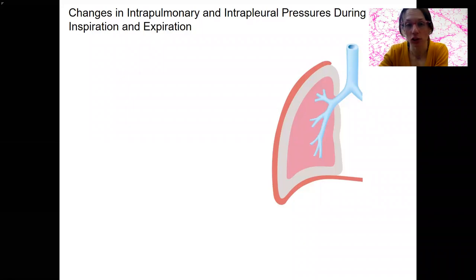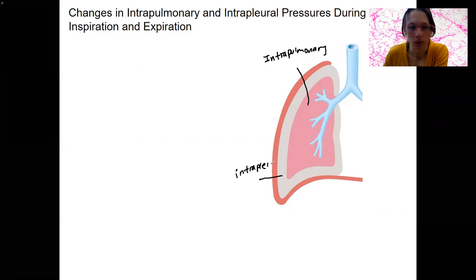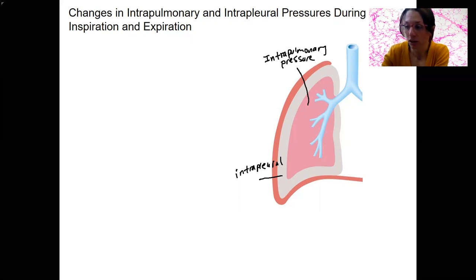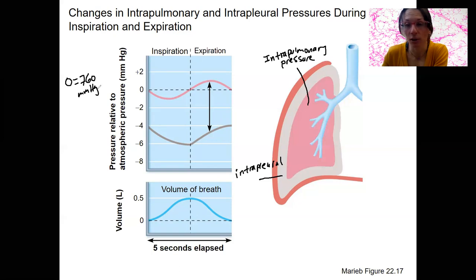Let's look at the changes in these pressures during inspiration and expiration and relate them to how they create inhalation and exhalation. What are these pressures? There's intrapulmonary pressure, there's intrapleural pressure, and the difference between them is transpulmonary pressure. I'm going to add in a graph here and dissect it. This graph shows up top the pressure relative to atmospheric pressure. Zero is going to equal 760 millimeters of mercury, which is the pressure of the atmosphere at sea level.